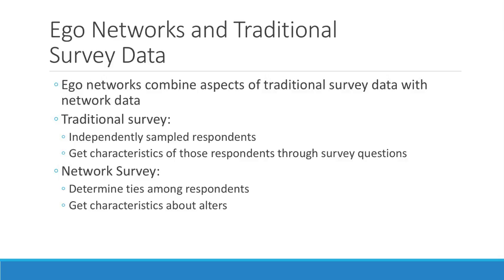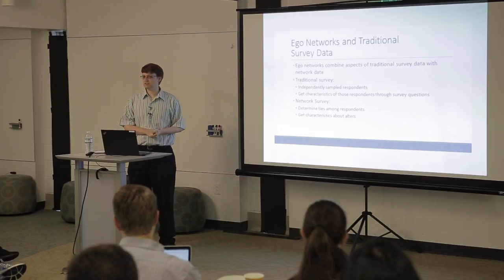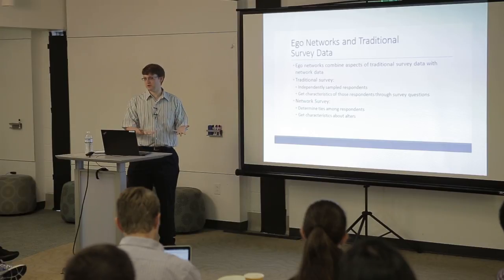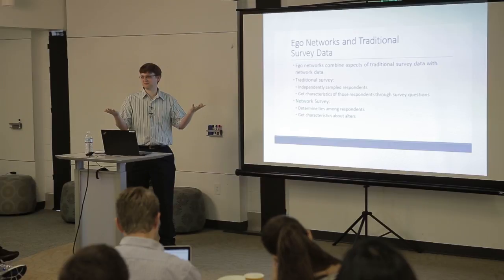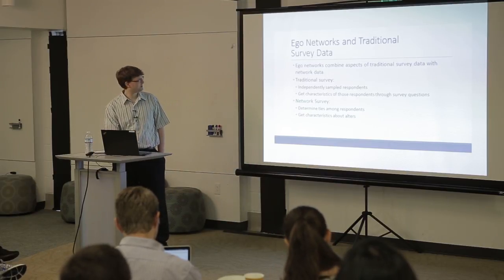Ego networks are basically a combination between traditional survey data and network data. In a traditional survey, you independently sample respondents and ask them characteristics about themselves. In an ego network, you're also asking them during these surveys who their friends are, and then you ask follow-up questions about those alters. The reason people collect ego networks is because they're relatively cheap to gather, though there are some trade-offs. The ties — the alters — we don't usually talk to them in an ego network, so the questions you can answer depend on what ego knows about his ties. For example, you might not ask the cholesterol level of friends because ego likely won't know that.